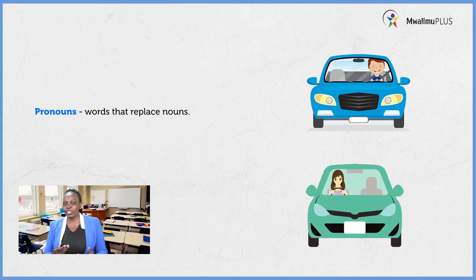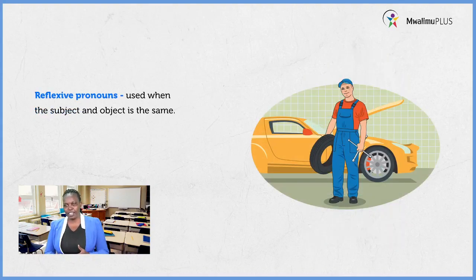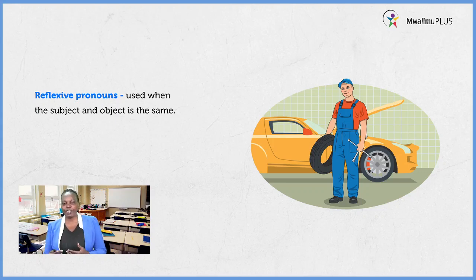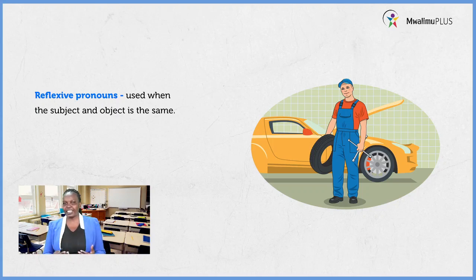From these personal pronouns is where we get reflexive pronouns. Before we form them, let us find out when do we use a reflexive pronoun. We use a reflexive pronoun in a sentence which has the subject being the same as the object. When we talk about the subject, that is the person doing the action. The object is the person receiving the action. So if in a sentence the person doing the action is the same person receiving the action, then we use a reflexive pronoun.